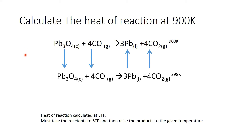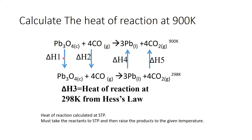To calculate the heat of reaction, we're going to be using the heats of formation. Delta H1 and Delta H2 are the sensible heats of lowering lead oxide from 900 to 298 K and carbon monoxide from 900 to 298 K respectively. Delta H4 and Delta H5 are the sensible heats of raising lead from 298 K to 900 K and carbon dioxide from 298 K to 900 K. Delta H3 is the heat of reaction at 298 K following Hess's law, and for that we use the heats of formation.